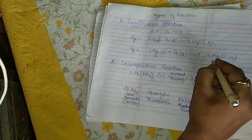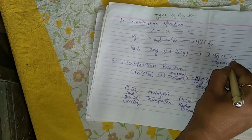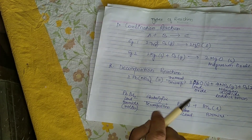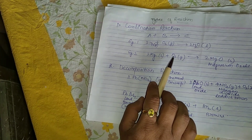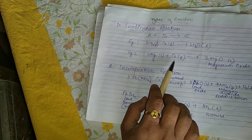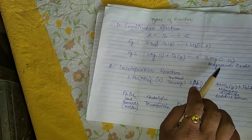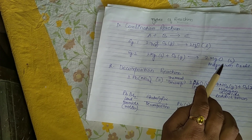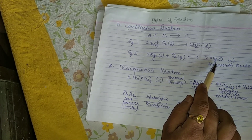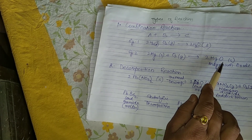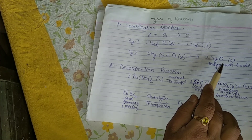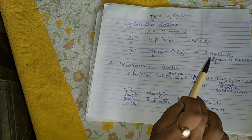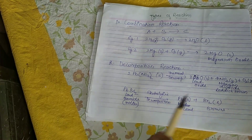This magnesium and oxygen reaction is very important from your board exam point of view, as it has been asked frequently. Magnesium is in the form of a ribbon — when it is burnt in the presence of oxygen, it burns with a bright dazzling white light, like the sparkle during Diwali. A white powdery substance known as magnesium oxide is formed. So: A + B gives C — this is a combination reaction.